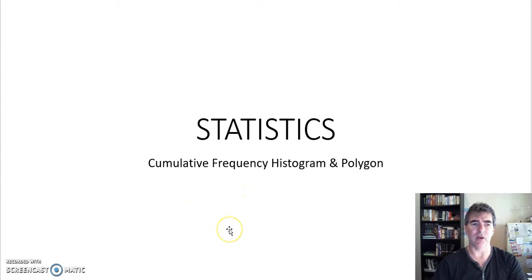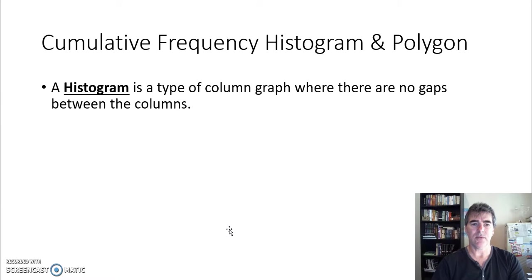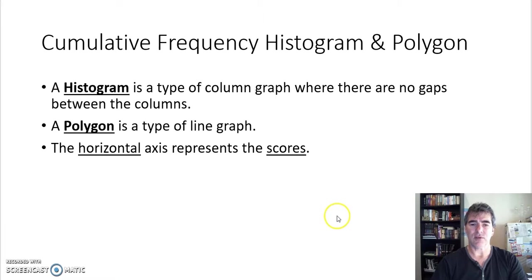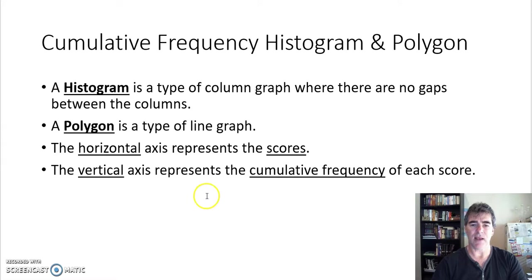Remember, our histogram is a type of column graph but there's no gaps in between. Our polygon is a type of line graph. Our horizontal axis represents the scores and our vertical axis represents the cumulative frequency.